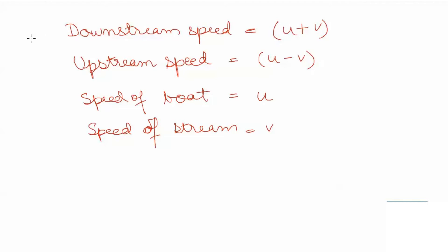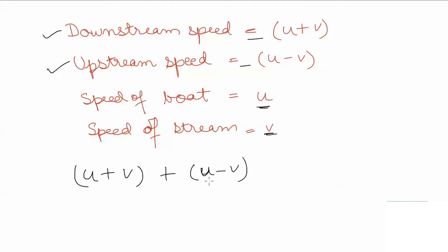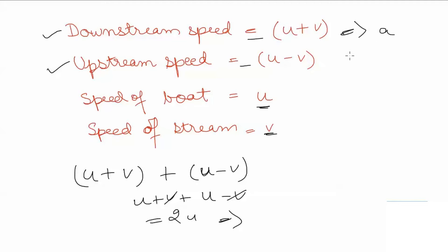In many questions, the downstream speed and the upstream speed are given but we need to find the speed of boat and the speed of stream. If you add the downstream speed and the upstream speed — that is U plus V plus U minus V — it comes out to be 2U, which is double the speed of boat. So, assuming downstream speed as A and upstream speed as B, the speed of boat is A plus B divided by 2.